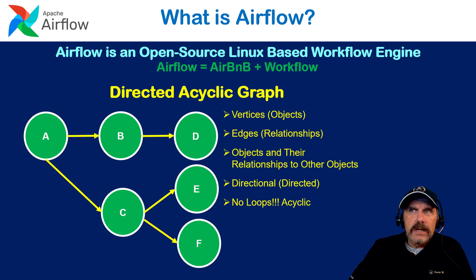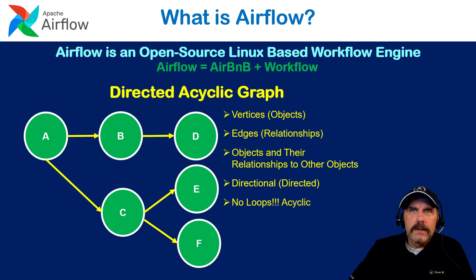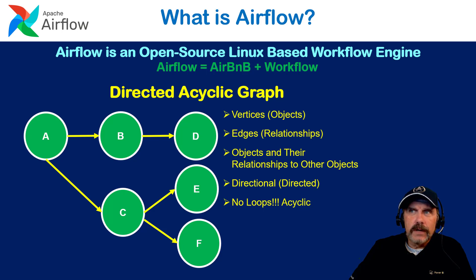Acyclic means not cyclical — it can't loop back on itself. It has to be a tree structure that never loops back. In this diagram, we see A connects to B and C; B connects only to D; C connects to E and F. In Airflow terms, task A is followed by B and C, which can actually run concurrently. B is followed by D, and C is followed by E and F, which can run concurrently. So it's defining the order of execution.